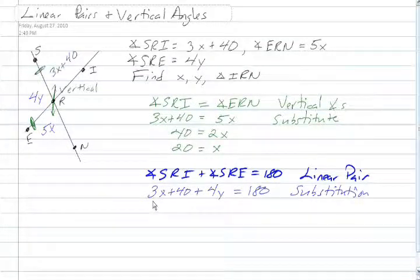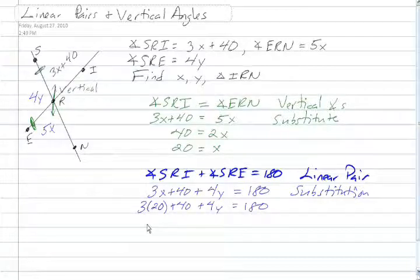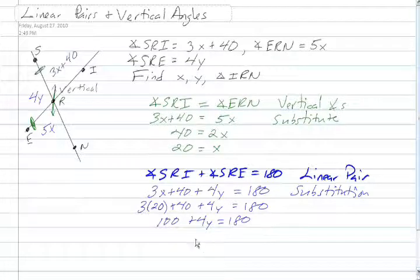But we also know that x is 20, so 3 times 20 plus 40 plus 4y is equal to 180. Then we have 60 plus 40 is 100, combination of like terms. 4y then is equal to 80, and y is equal to 20.